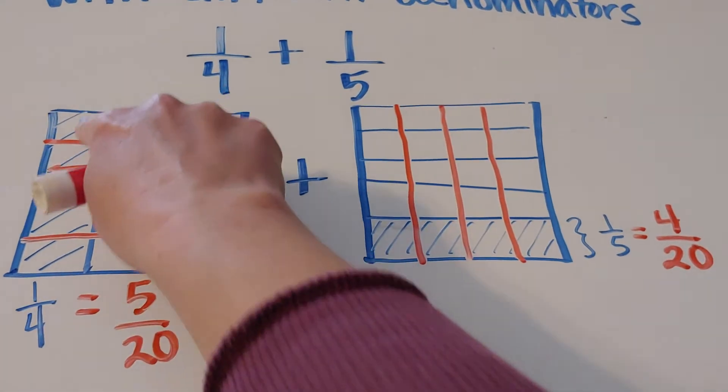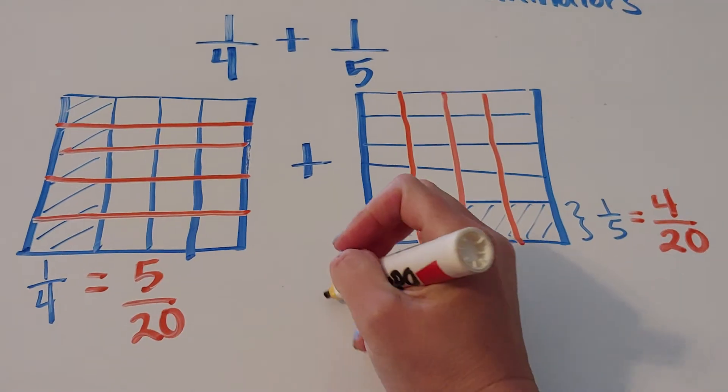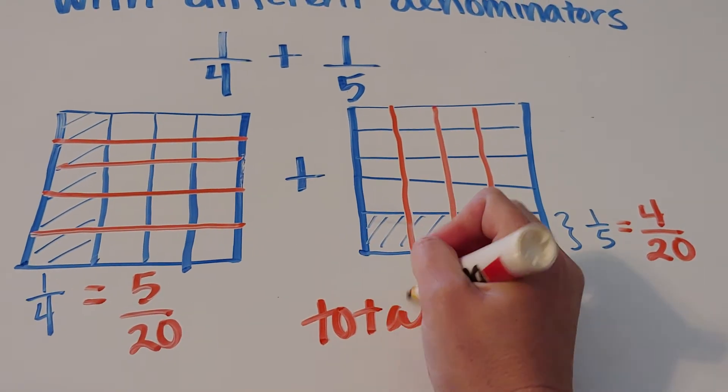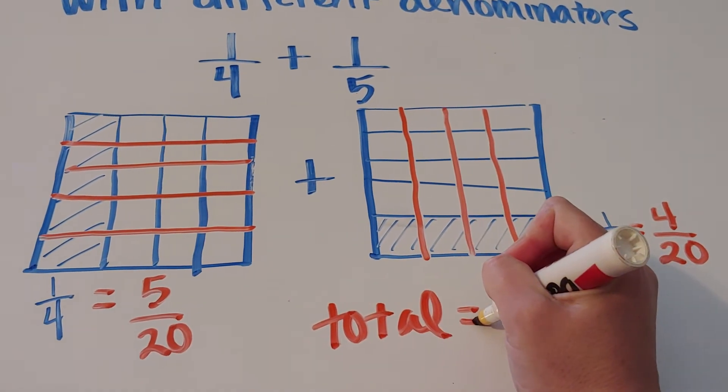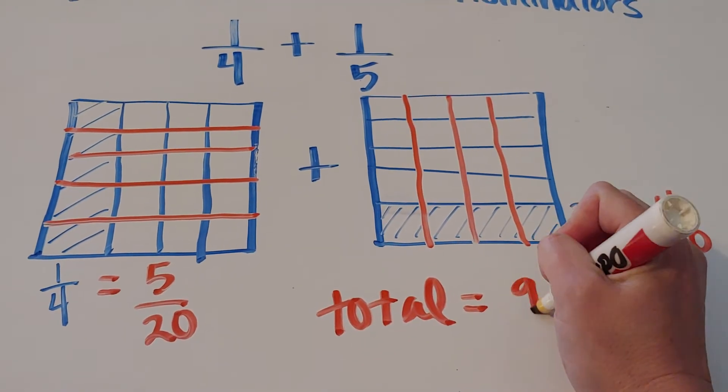So when I look to see how many total shaded squares, the total shaded is five plus four, or nine out of twenty.